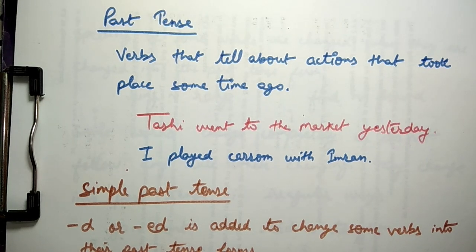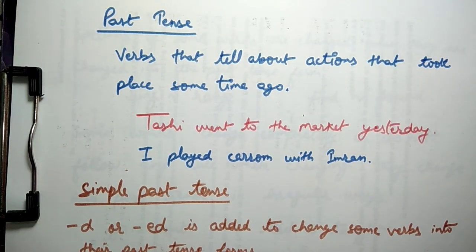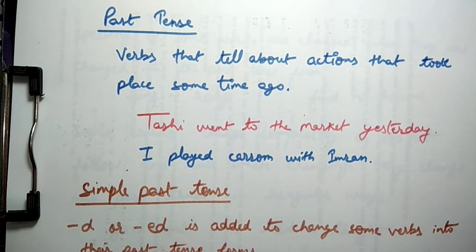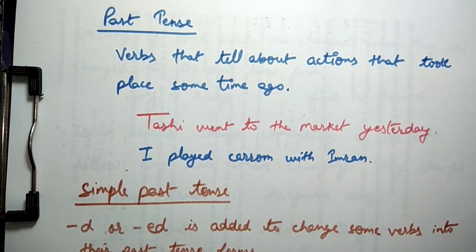But before starting today's video, let us revise what was taught in the previous one. In the previous video I had told you that verbs don't only tell about actions. Rather, verbs also tell about the time of action. The verbs that tell us about actions that take place regularly are in simple present tense. Also, things that are always true and general statements, they are also expressed in simple present tense.